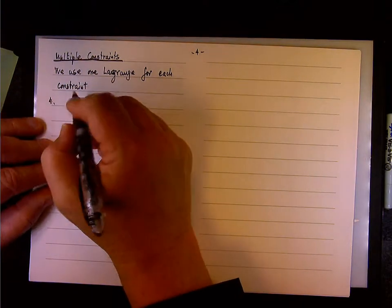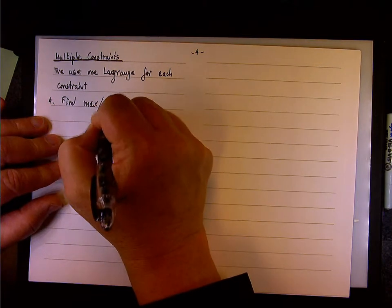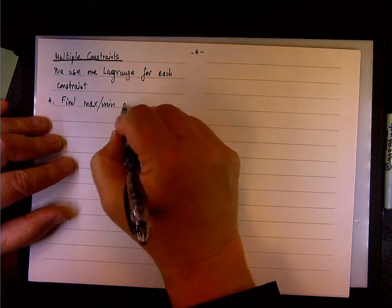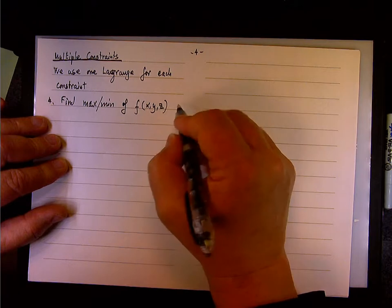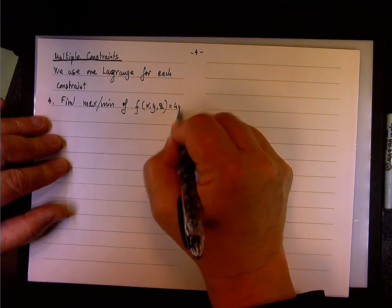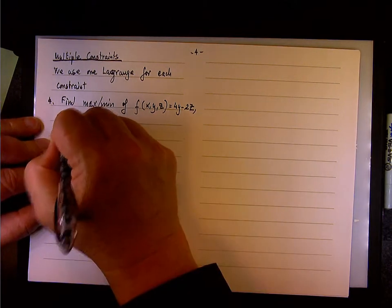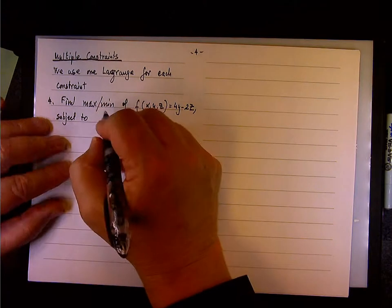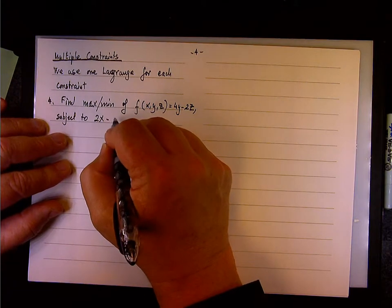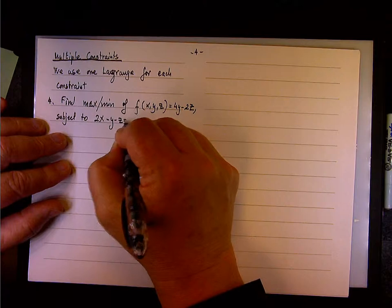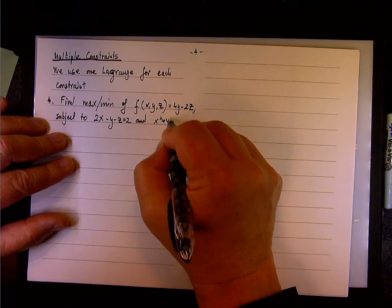Here's the example — I think it's example 4. Find the max and min of f(x, y, z) = 4y minus 2z, subject to the constraints: the first constraint is 2x minus y minus z equals 2, and the other constraint is x squared plus y squared equals 1.